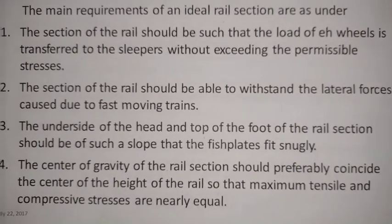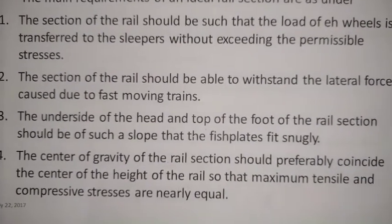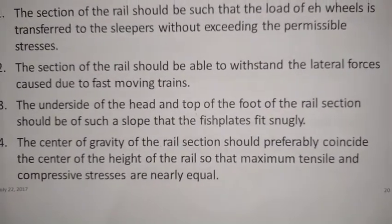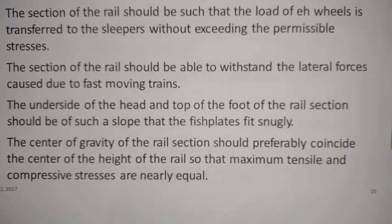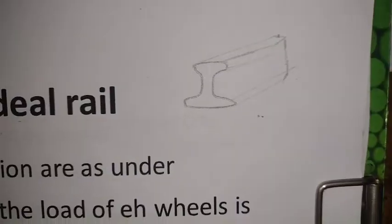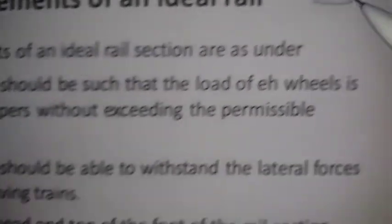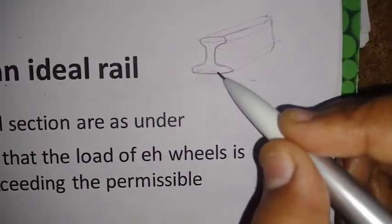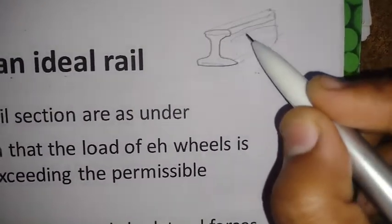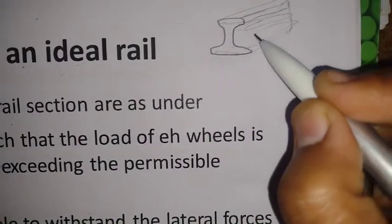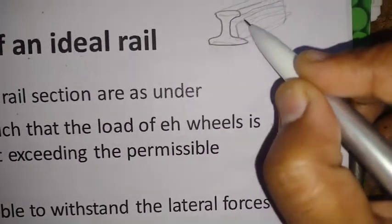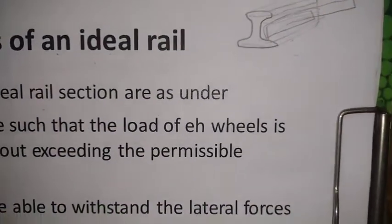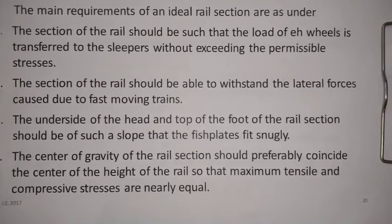Fish plates also provide some gap for expansion and contraction. For each joint, two fish plates are required — one on either side of the joint. Fish plates and rails are held together by means of four fish bolts. The underside of the head and the top of the foot of the rail should be shaped such that the fish plates can fit snugly.